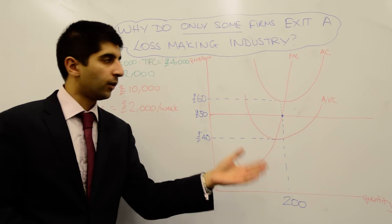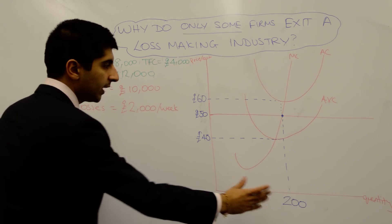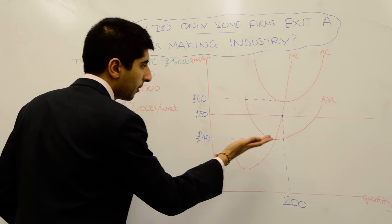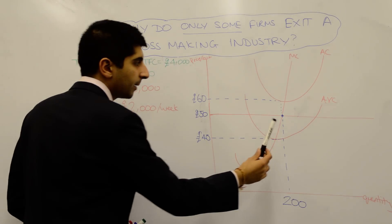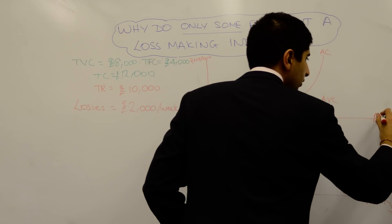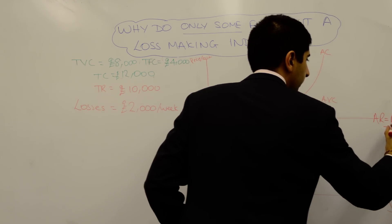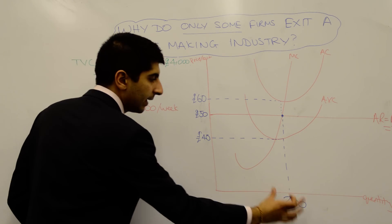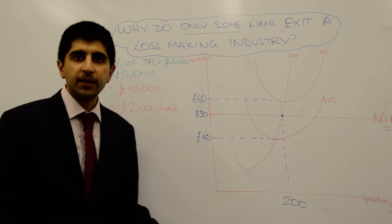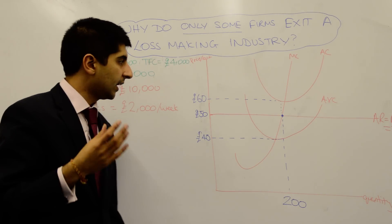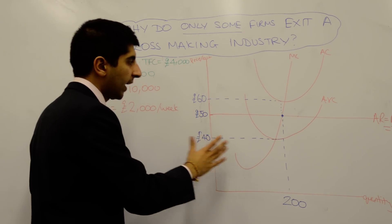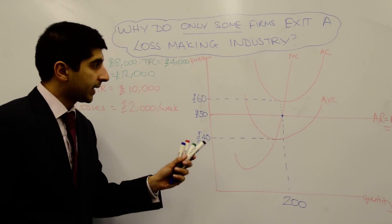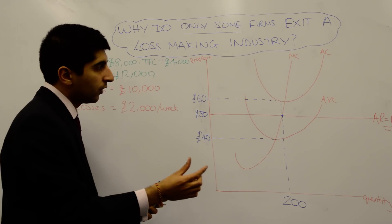Consider this scenario. A firm is operating with these costs and revenues — I've put figures on the axis to help you understand this more clearly. A profit-maximising firm will produce where MC equals MR. These are our basic cost and revenue diagrams of perfect competition. There's MC equals MR, so that point gives us average revenue, marginal revenue, and the demand curve. That level of output is 200 units, and at that level of production the price is £50, taken from the market. We know this firm is making a loss — average revenue is less than average cost.